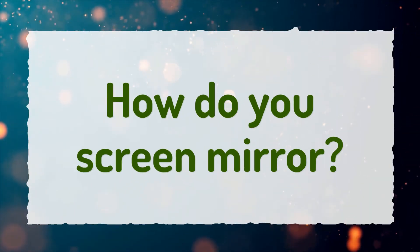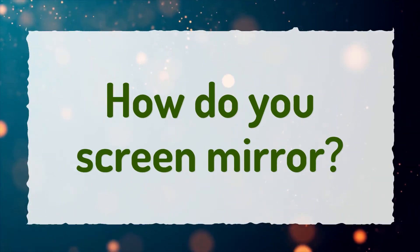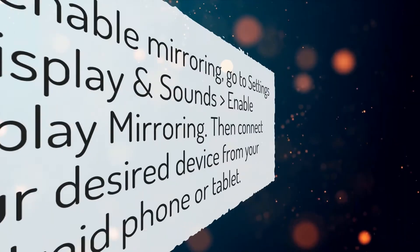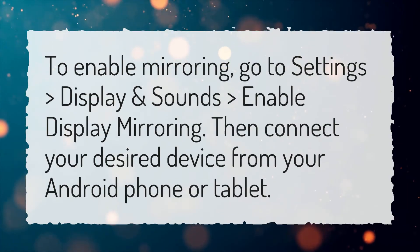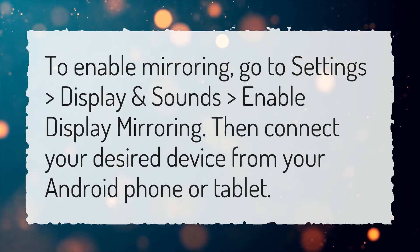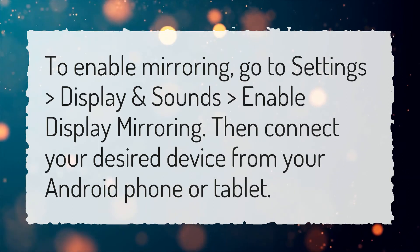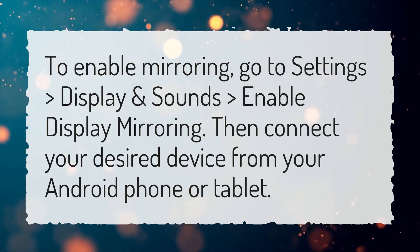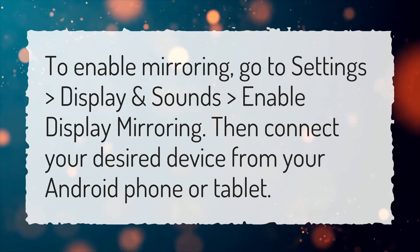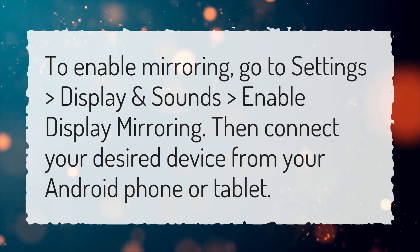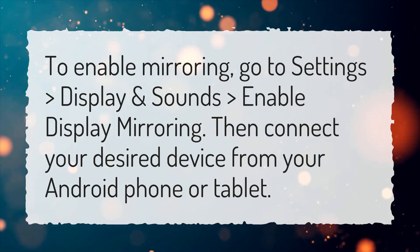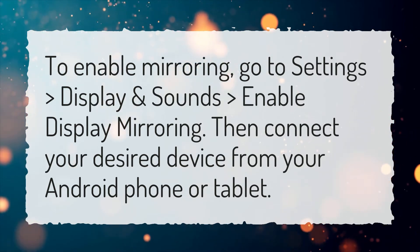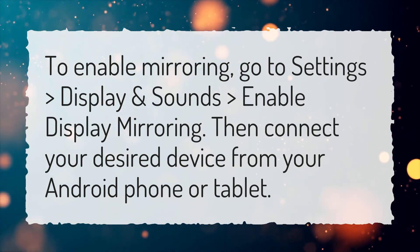How do you screen mirror? To enable mirroring, go to Settings, Display & Sounds, and enable Display Mirroring. Then connect your desired device from your Android phone or tablet.